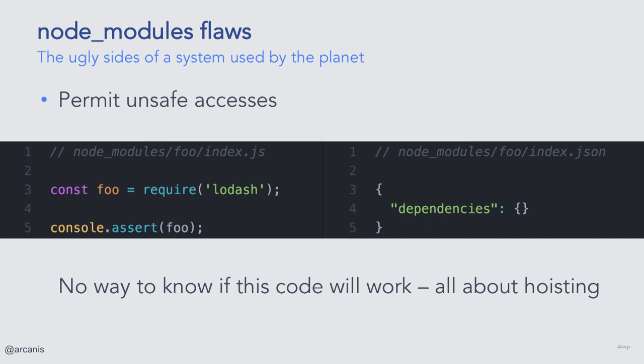Another issue, and not the least, is that node_modules allow phantom dependencies. You never know for sure whether your application will work or not if you forget to list a dependency in your package.json, and the worst thing is that you really have no way to know it. For example, if you forget to list Lodash in your dependencies, it can work by sheer virtue of hoisting. But if your production environment doesn't install dev dependencies, there is a chance that Lodash won't be installed and everything will crash at deploy time.